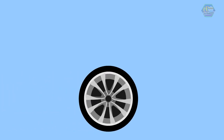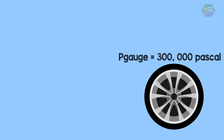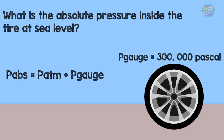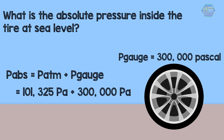For the second example: suppose you have a tire with a gauge pressure of 300,000 pascals — what is the absolute pressure inside the tire at sea level? Absolute pressure equals atmospheric pressure plus gauge pressure. With a gauge pressure of 300,000 pascals and atmospheric pressure of 101,325 pascals, the absolute pressure is 401,325 pascals.